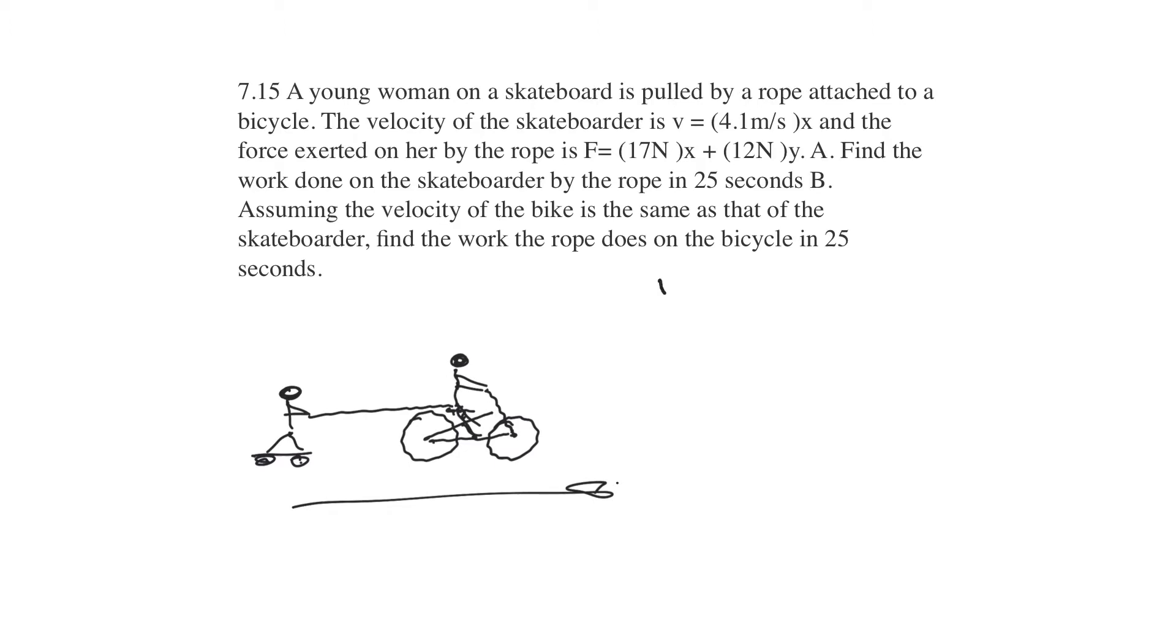So that means her velocity equals 4.1 meters per second. The force exerted on her by the rope is 17 newtons X, 12 newtons Y. So she's got a 17 forward and a 12 up. So the 12 up is being wasted because it's just opposing her weight.